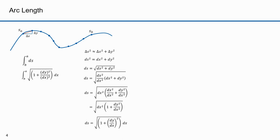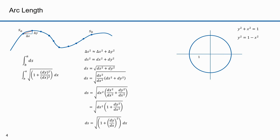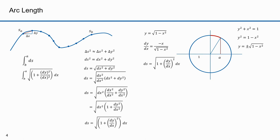Now I'll look at a specific example: a circle. The formula for a circle expressed in terms of y is ±√(1 − x²). The positive part defines a semicircle above the x-axis. For an arc where x goes from 0 to a, I need to express y as a derivative dy/dx. The derivative of √(1 − x²) is −x over √(1 − x²), which any student of calculus would know. I plug that formula for dy/dx into the expression for ds.